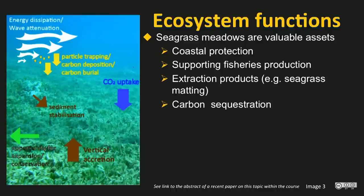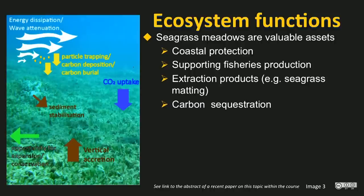Seagrass also stabilise sediments, stopping sediment from being kicked up during storms. In addition to these physical processes, they support fisheries production as seen in the food web diagram, and in some places there is direct extraction of products — for example, seagrass matting sold in furniture shops worldwide. Finally, seagrasses perform carbon sequestration, and there is a link below to a recent paper on the role of seagrass in climate mitigation and soft engineering solutions for adapting to climate change.